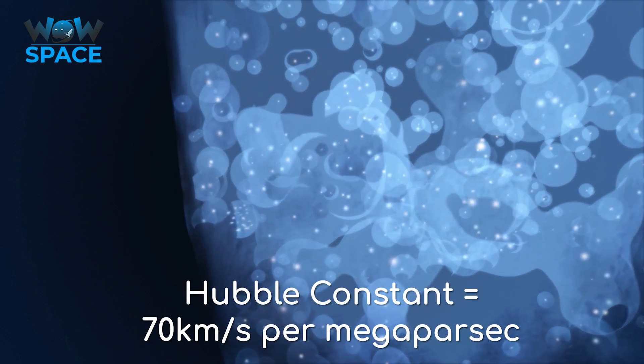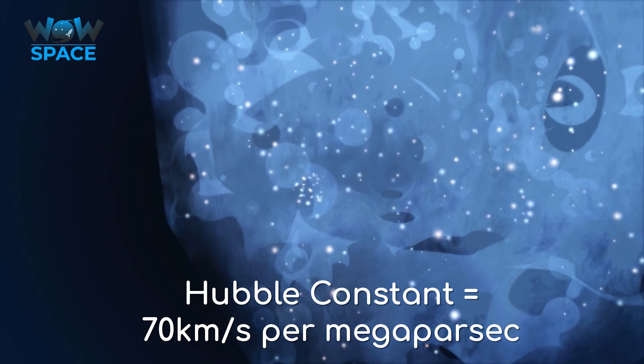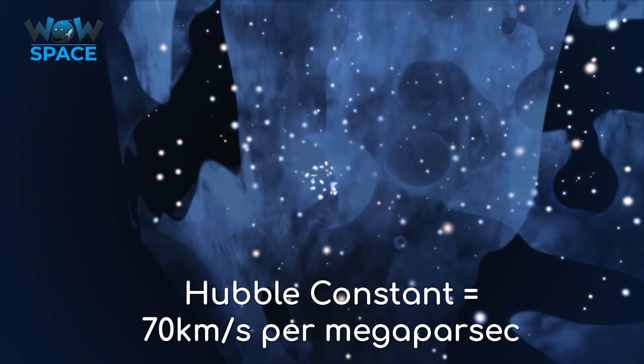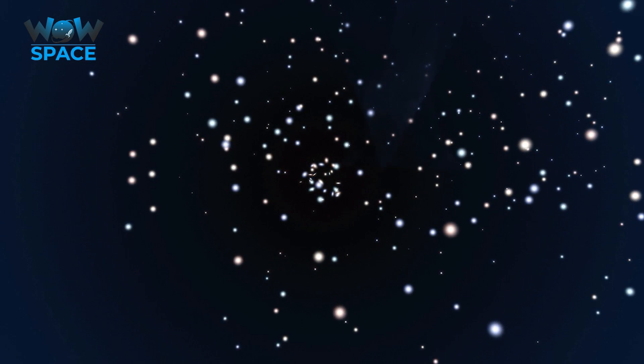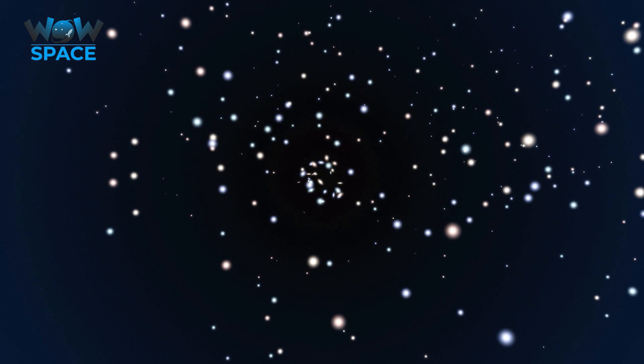The Hubble constant has shown that the universe is expanding at roughly 70 km per second every 1 megaparsec. Given that the universe likely has an age of roughly 13.8 billion years, and because we observe that it is dynamic and expanding,